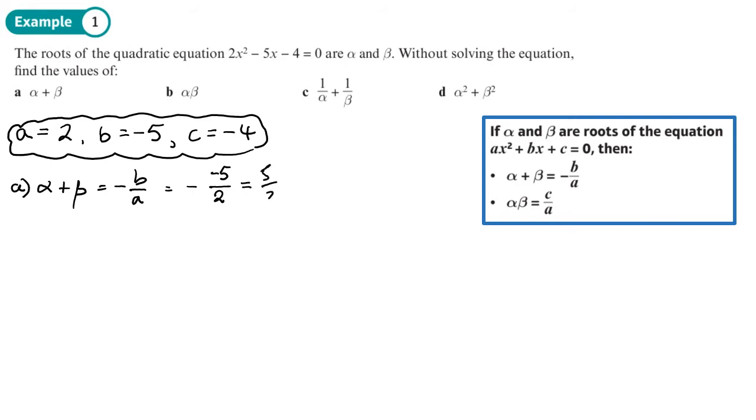I would leave it like that, not change it to a decimal. Leave it as an improper fraction. Part B, alpha beta is C over A. That's negative 4 over 2, which simplifies to negative 2.